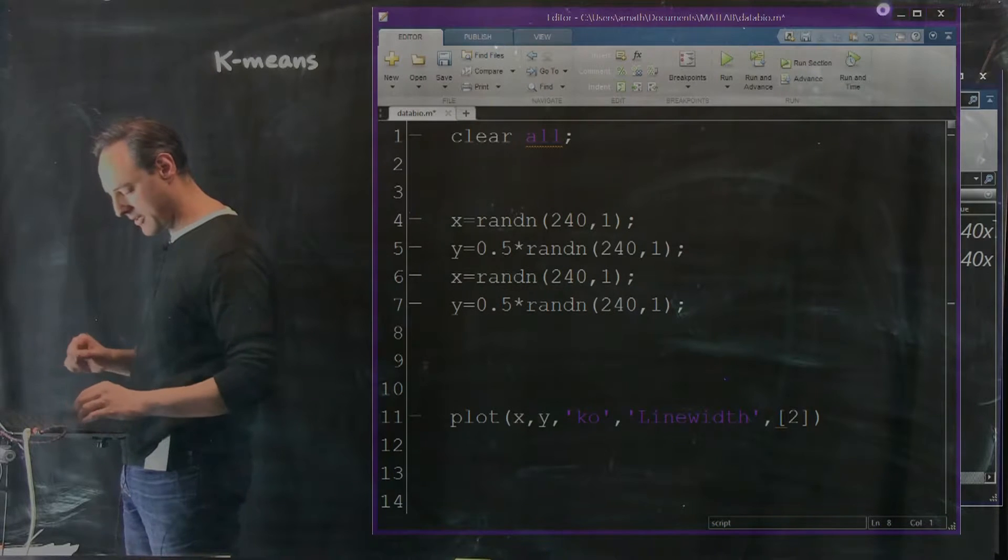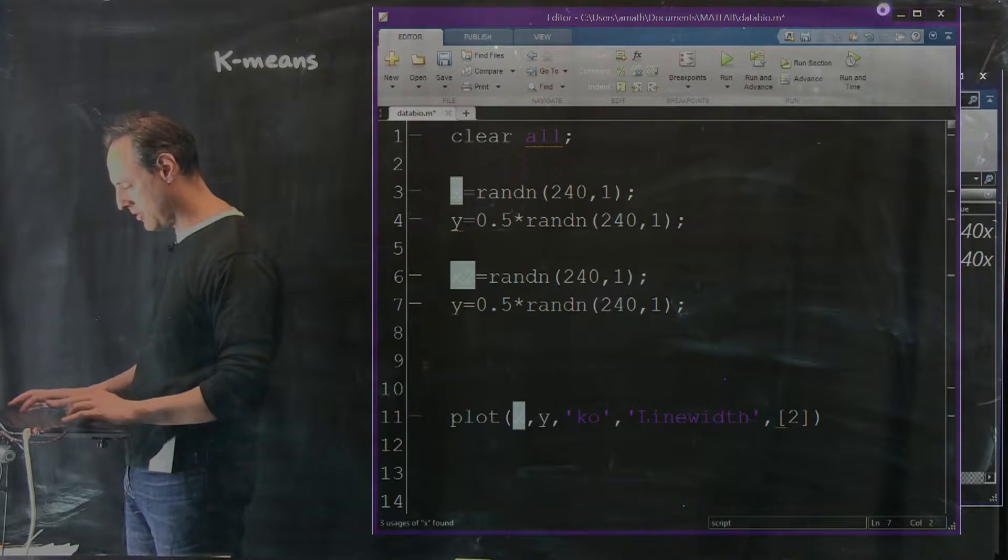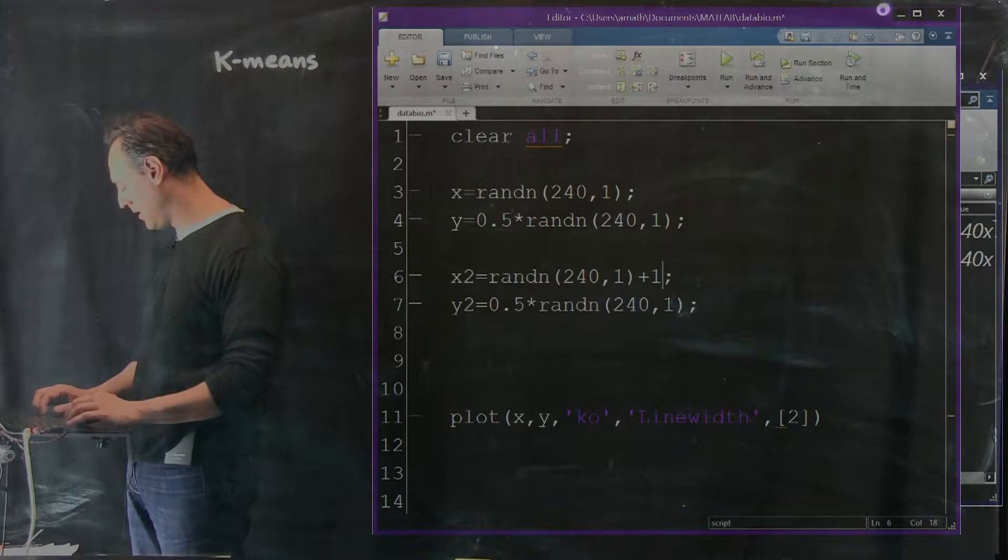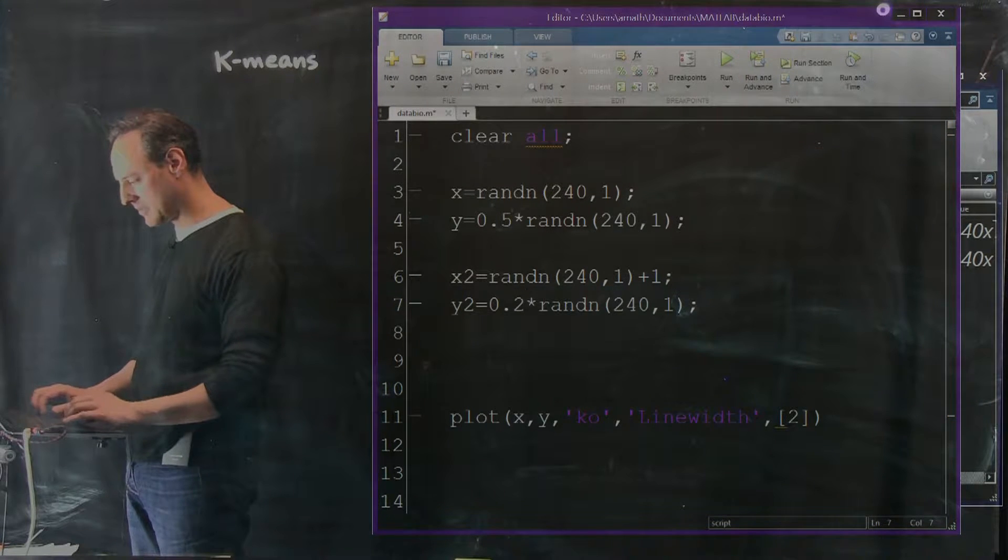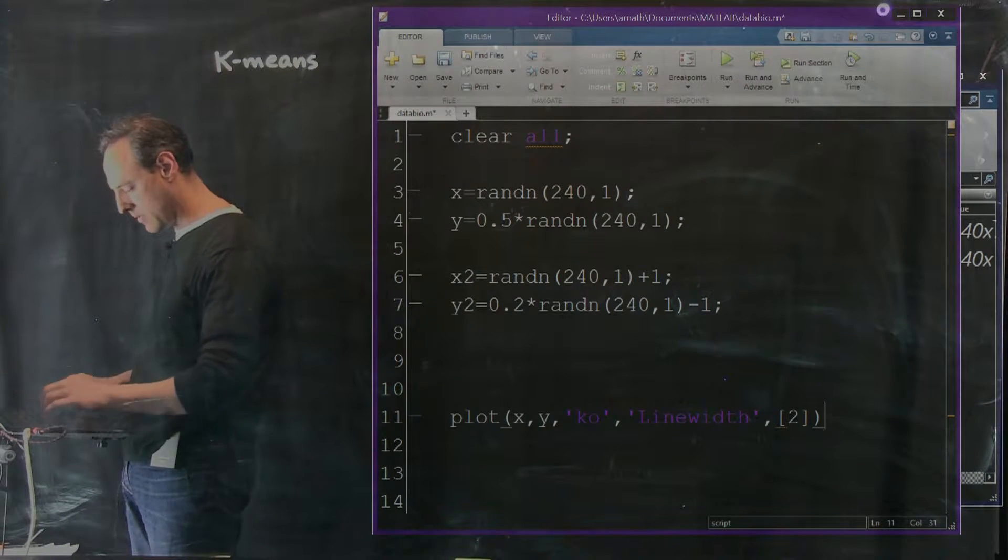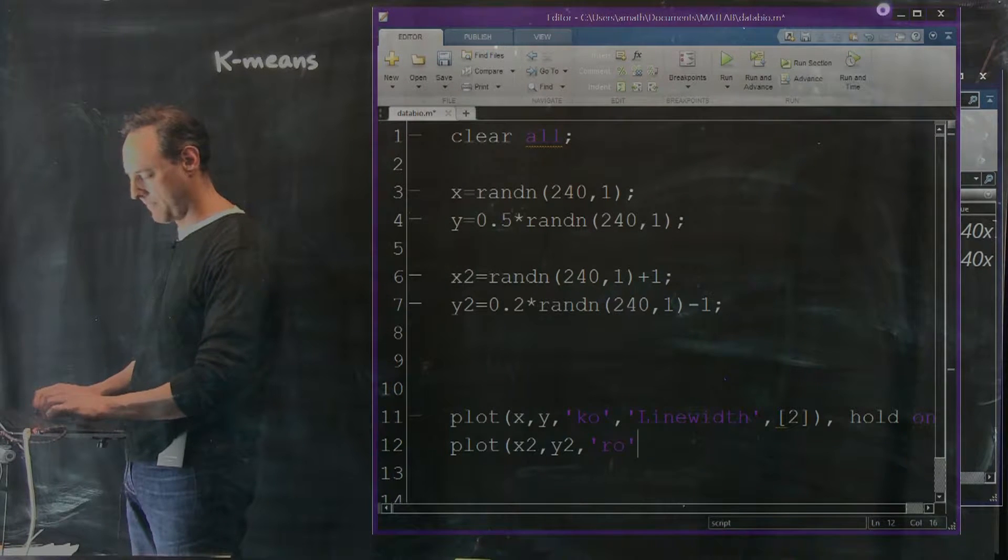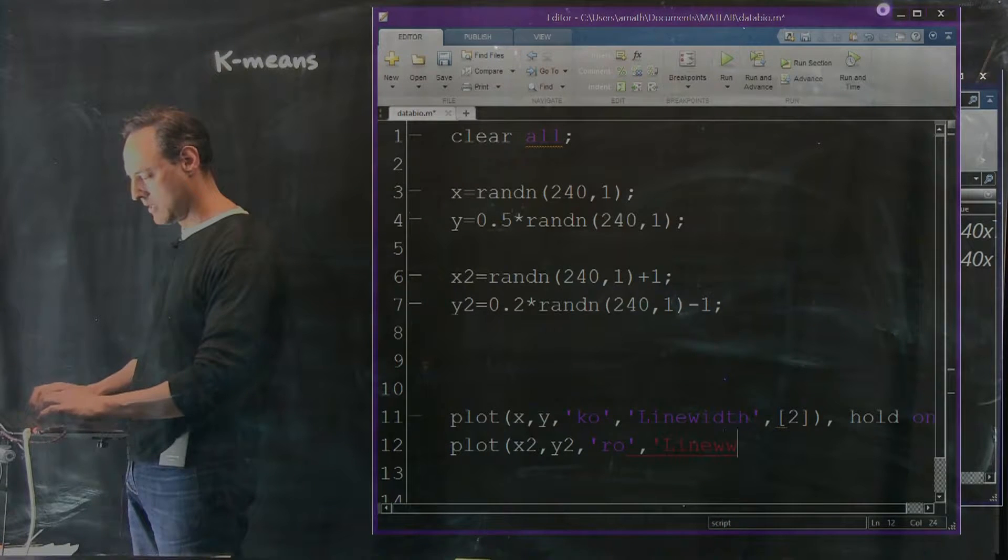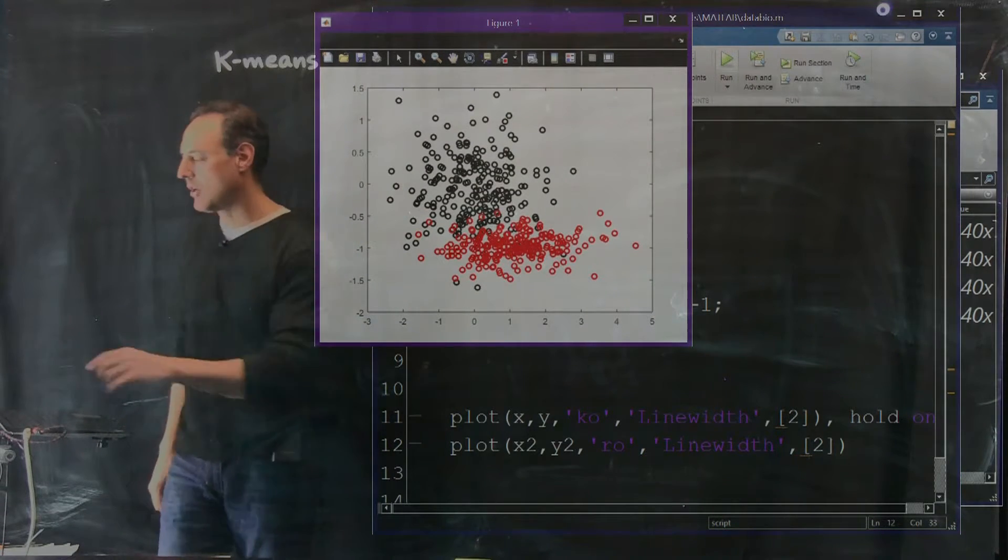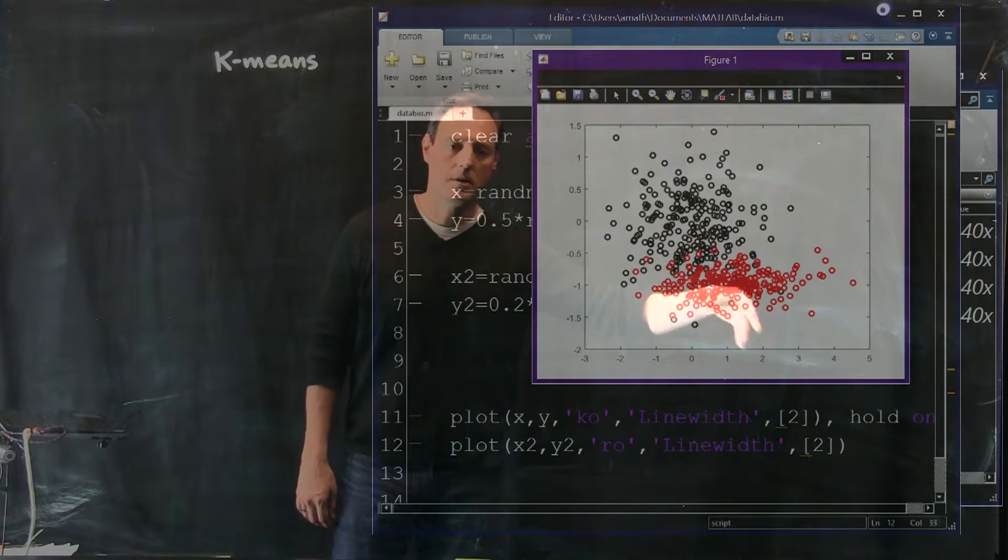We're going to make two more variables. I'll call these x2 and y2. I don't want to make the same distribution. What I'm going to do is center this one over around 1 or negative 1, and I'll make this some other ellipse centered around minus 1. I can run this. Now what we want to do is hold on, plot x2, y2. Let's make this red. So now we're going to have two sets of data, and there they are.